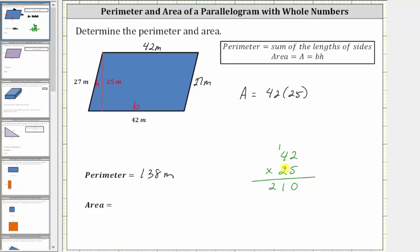And now before multiplying by the two in the tens place value, we place a zero in the ones place value here, and now we multiply by two. Two times two is four, and two times four is eight.